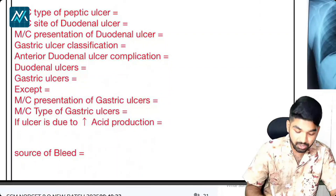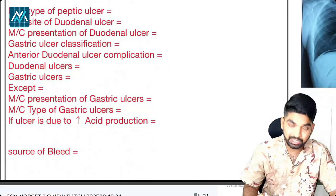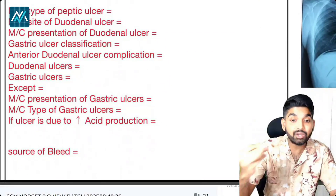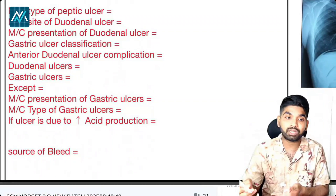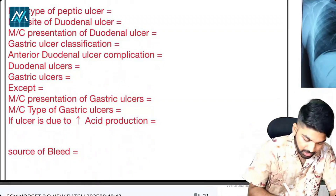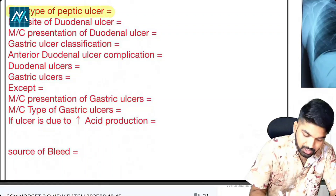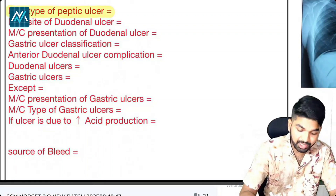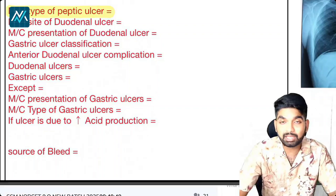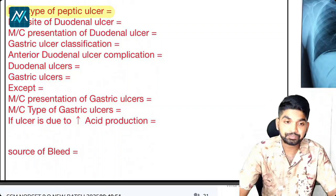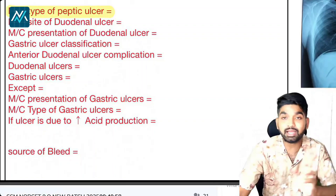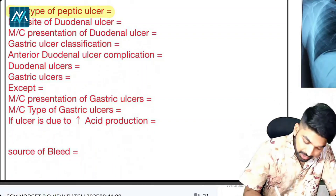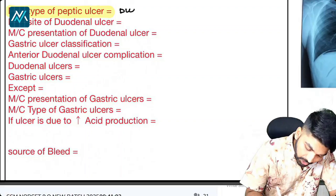Let us quickly complete these one-liners so that you will get clarity on what is being taught. The most common type of peptic ulcer — can you tell me whether it is duodenal or gastric? Excellent — it is duodenal ulcer.